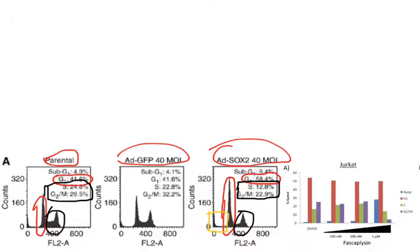Usually looking at the sub-G1 peak, you can try to determine the amount of apoptosis happening. In this treatment, there's not a significant increase in the sub-G1 peak, so there's not a significant increase in apoptosis using this treatment.